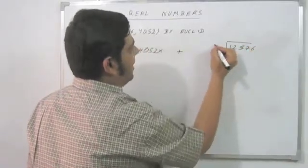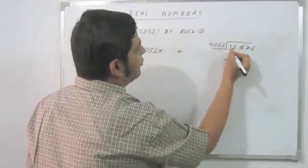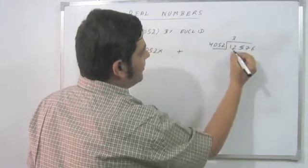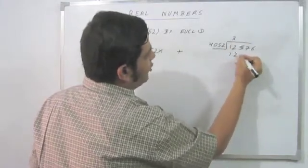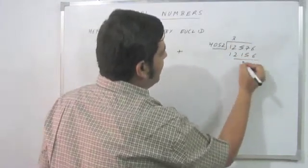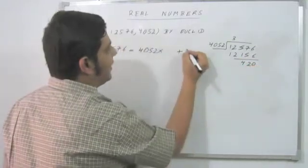12576 when divided by 4052, it goes thrice and I get 12156, my remainder comes out as 420.